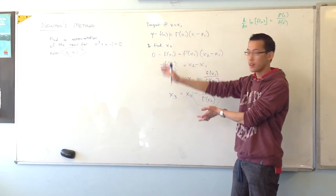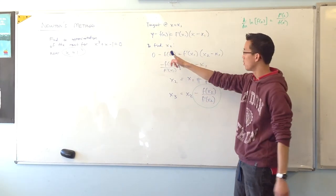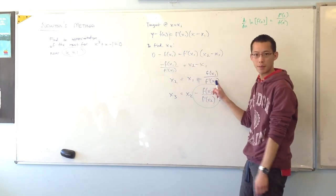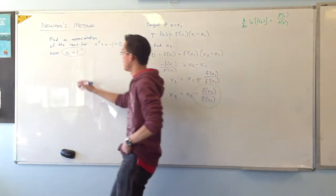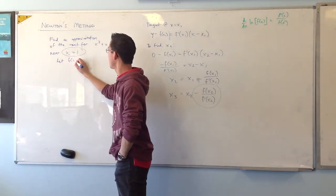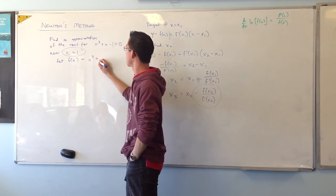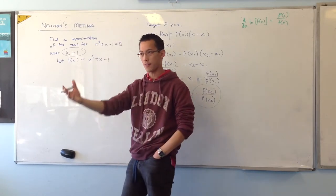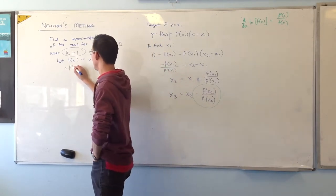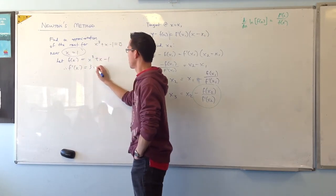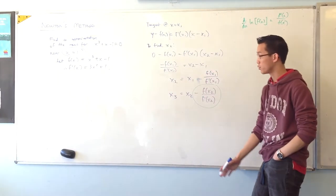If I'm going to use Newton's method, I've got the function, but I'll also need its derivative, right? Because otherwise I won't be able to evaluate this. So let's let f equal this, so therefore f' is that, so that's good.